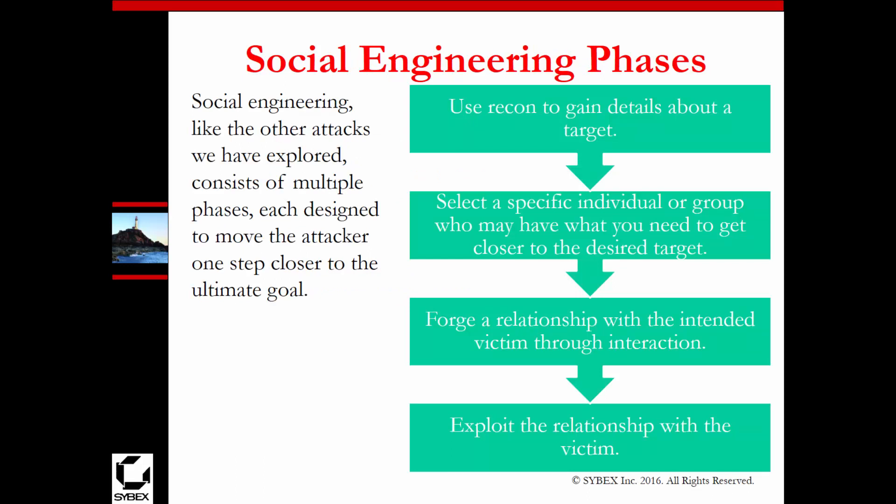The different phases of a social engineering attack: it could start with using recon to gain details about your target — web searching, looking for organizational charts. Then you select a specific individual or group so you know who they are and can use them to gain access to your intended target. You could build a relationship with them — that's getting a bit excessive, but you could — and then you exploit that relationship. This is just one set of phases, assuming you're going to build that relationship.